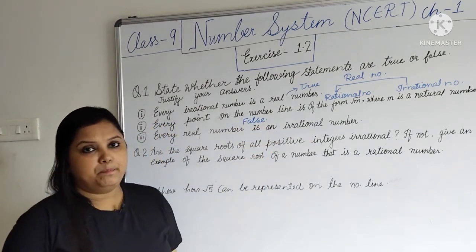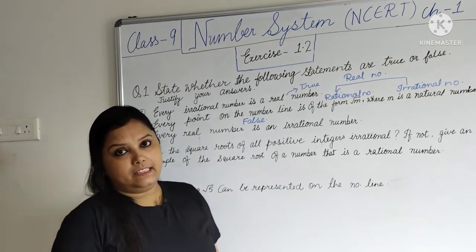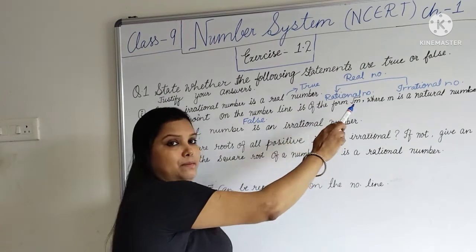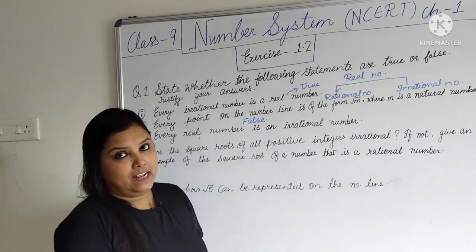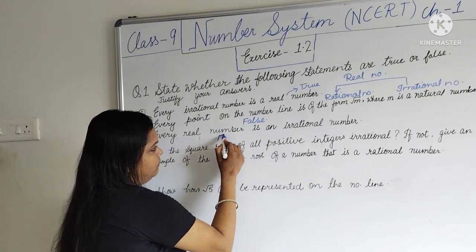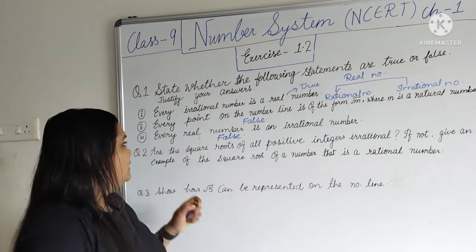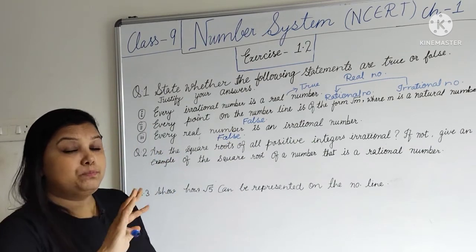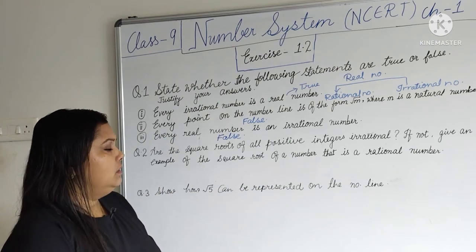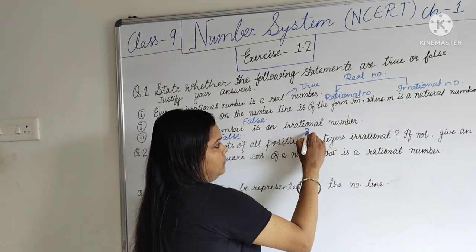Now the next one: every real number is an irrational number. We have already discussed that real numbers include rational numbers as well as irrational numbers, so this statement is clearly FALSE, because a real number includes both rational numbers and irrational numbers.